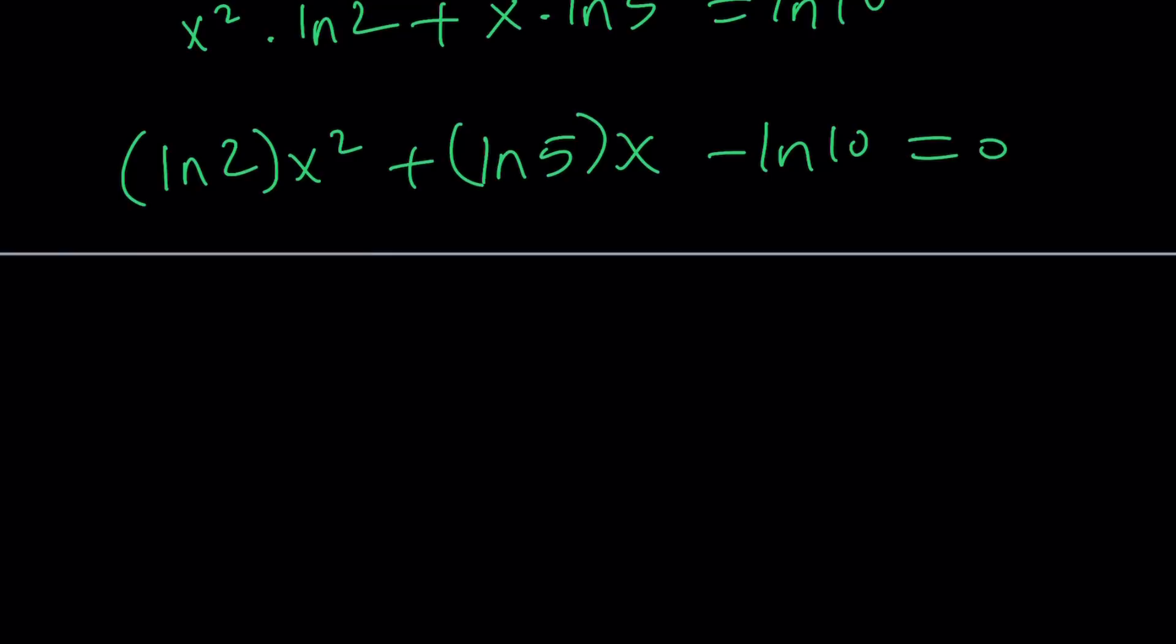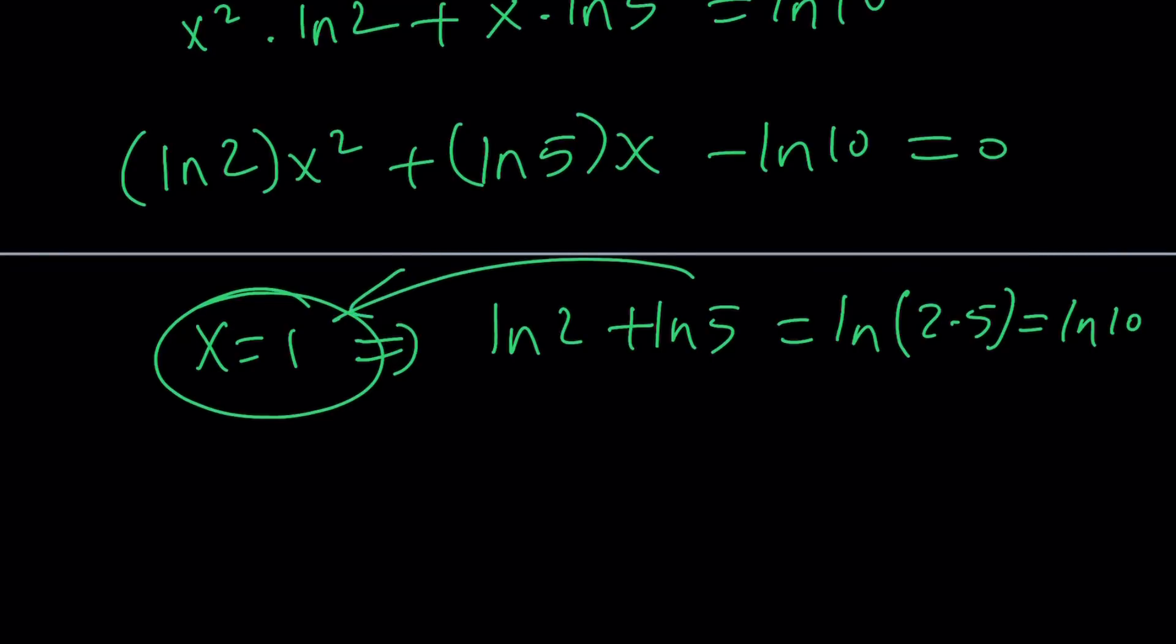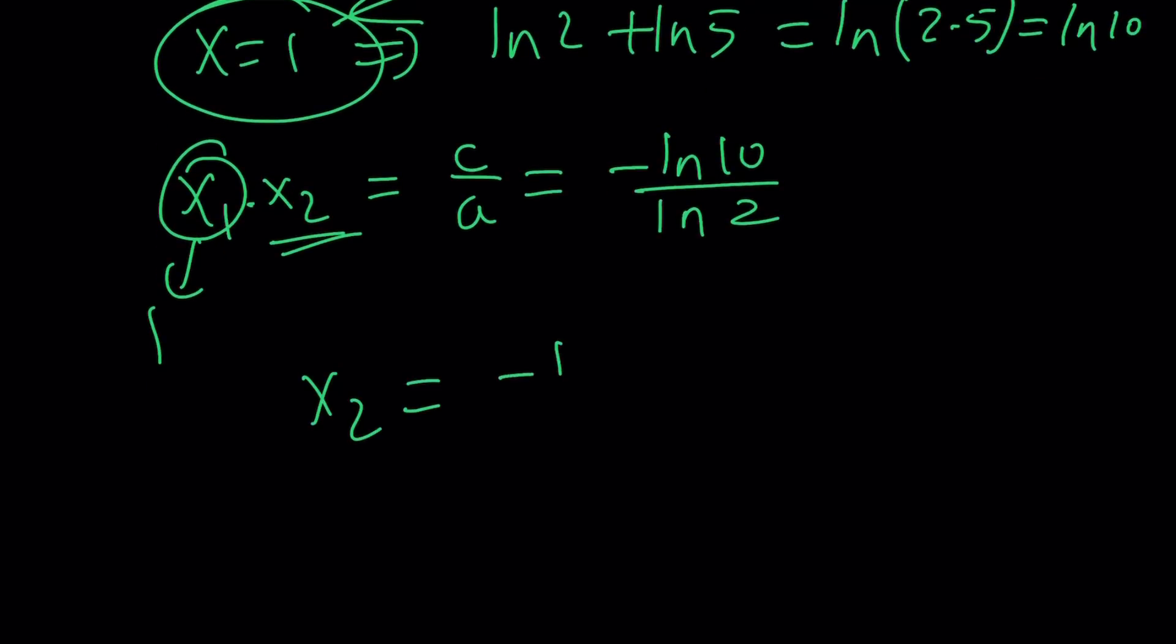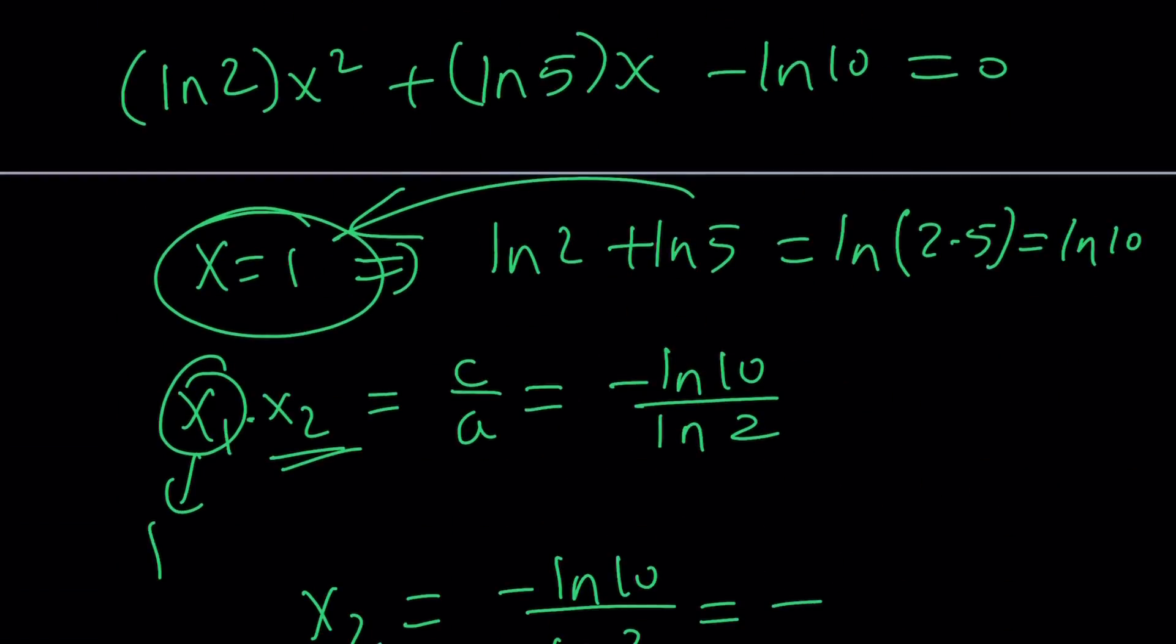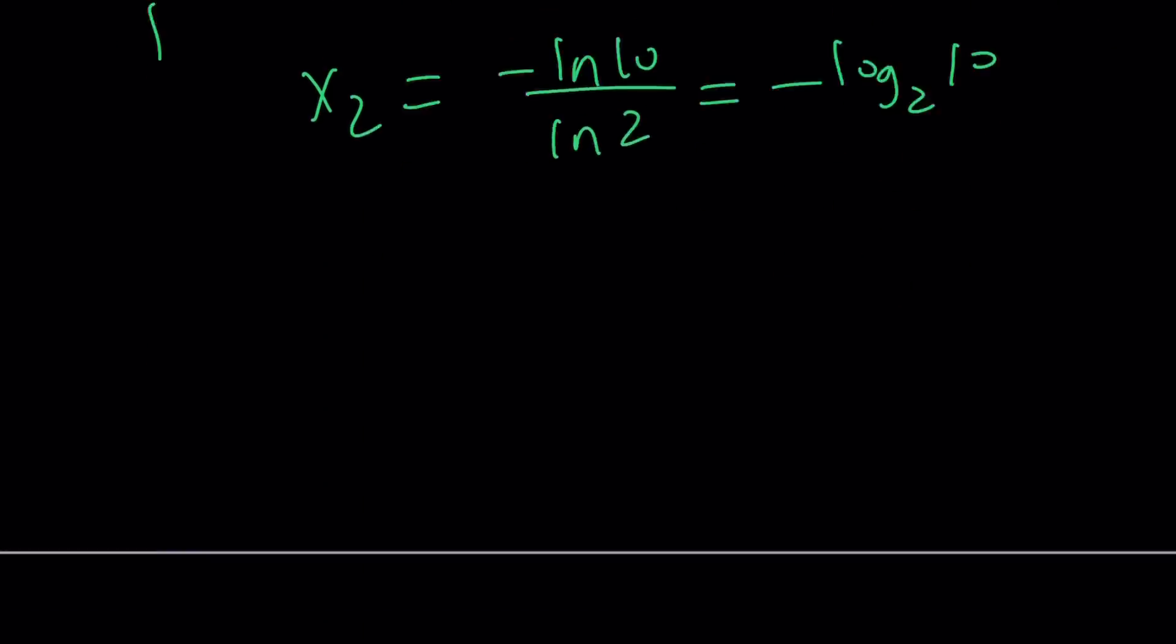So you can go ahead and use the quadratic formula. I'm not going to show you that because we've done that already. Let's use another method. Vieta's formulas tells us that, I mean, first of all, x equals 1 is a solution. Why? Let me tell you why real quick. Because ln 2 plus ln 5 is ln 2 times 5. And that is ln 10. So the sum of the coefficients is 0, which means x equals 1 is a solution. So we do also know that x1 times x2 is c over a in a quadratic equation, which is negative ln 10 over ln 2. But I know that one of the solutions is 1. So that leaves us with x sub 2, which is the other solution, which can be written as negative ln 10 over ln 2. But can I write it differently? Sure. You can also write it as negative log 10 base 2.